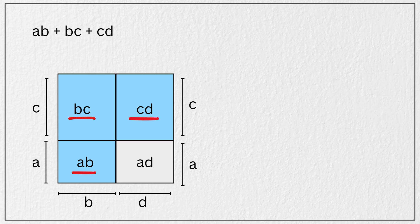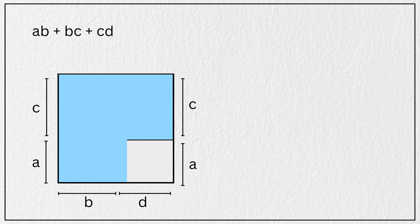is just the area of this big completed rectangle A plus C times B plus D minus the area of this small missing rectangle A times D. Correct?